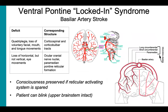The third brainstem syndrome is ventral pontine syndrome, otherwise known as locked-in syndrome, which is the result of basilar artery occlusion. Since the basilar artery is the predominant artery supplying the ventral pons, strokes in this location have a relatively poor functional outcome. Damage to bilateral corticospinal and corticobulbar tracts results in quadriplegia and loss of all voluntary facial, mouth, and tongue movements. Ocular cranial nerve nuclei and the paramedian pontine reticular formation lead to loss of horizontal but not vertical eye movements. If the reticular activating system is spared, consciousness is preserved. The only voluntary motor function left for these patients are vertical eye movements and the ability to blink.